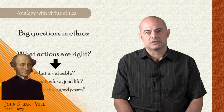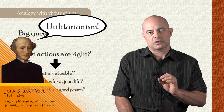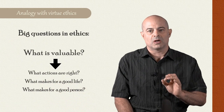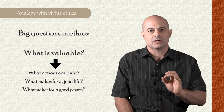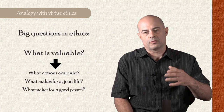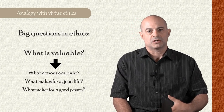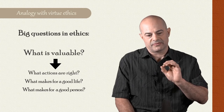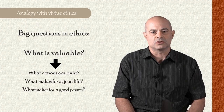Now, consequentialist theories, such as Mill's utilitarianism, make the question of what's most valuable the fundamental question. So what things in life are most valuable? Then you can understand something like right action in terms of — well, the right action is the thing that promotes that which is most valuable, or a good life is that which contains many valuable things. So the fundamental question is about value, and then it goes on to answer the other questions in terms of value.